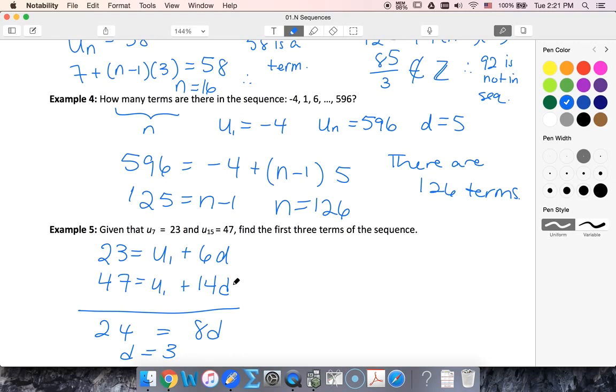Once D is 3, I can come back and substitute to find my U1. U1 plus 6 times 3, of course that's 18. So that leaves me a U1 of 5.